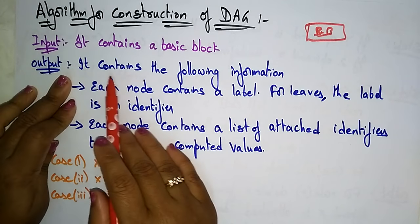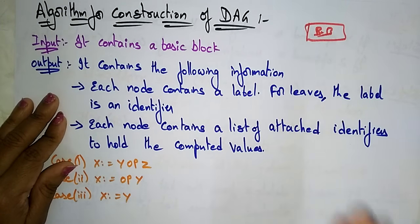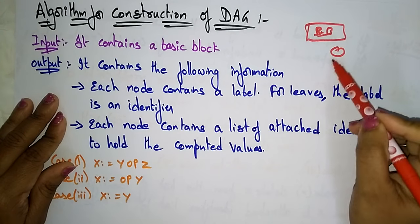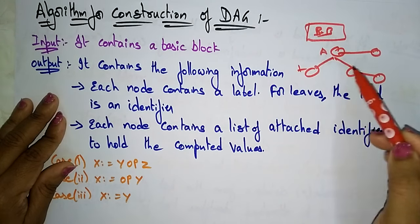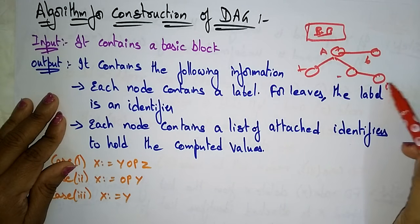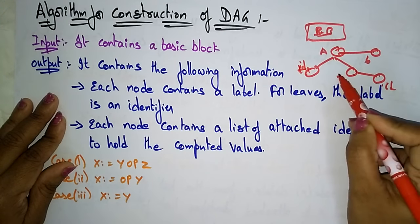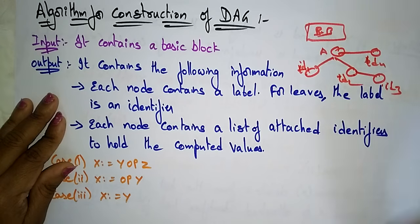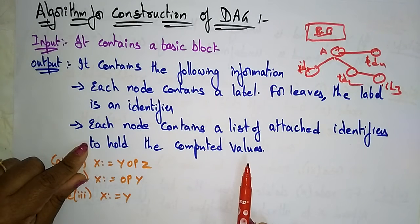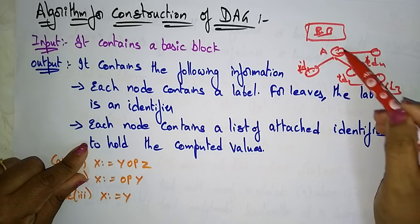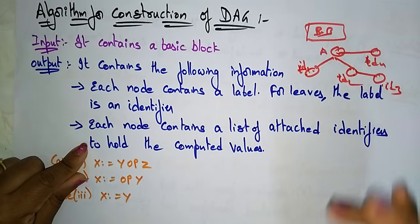The output contains the following information: each node contains a label. For leaves, the label is an identifier — like id1, id2, id3, id4. So leaves are always identifiers. Each node also contains a list of attached identifiers to hold the computed values — not just a single identifier, but a list can be attached in the DAG.